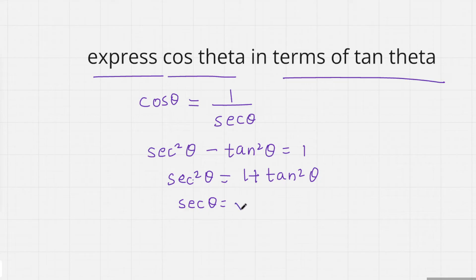We just got secθ, so replace secθ with this value. Cosθ will now be 1 divided by √(1 + tan²θ). This is how you can express cosθ in terms of tanθ.